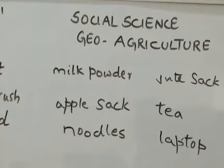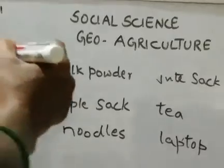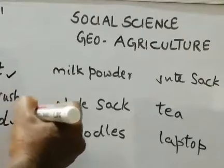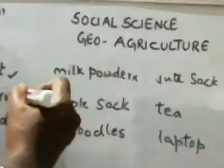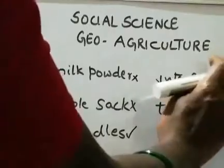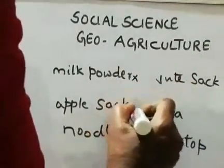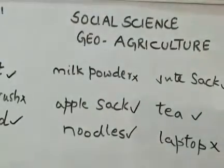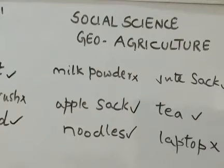Shirt — yes, it is from crops. Toothbrush — plastic, no. Bread — yes. Milk powder — no. Apple sack — no. Noodles — yes. Jute sack — yes, children, because jute is also a crop. Apple sack also yes. Tea — yes. Laptop — no. This is how you experience every day which items come from crops and which do not. This is a brainstorming exercise.